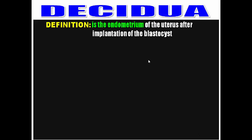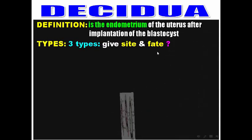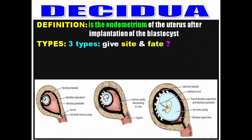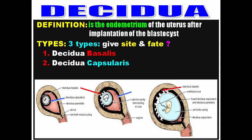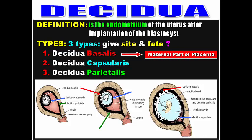After implantation, the endometrium is called decidua. Decidua is the endometrium of the uterus after implantation. We have three types, and you should know the fate of each. Decidua basalis is between the blastocyst and the myometrium. Decidua capsularis is between the blastocyst and the uterine cavity. Decidua parietalis is the remaining part. The decidua basalis is the most important because it forms the maternal part of the placenta. Decidua capsularis and parietalis degenerate.